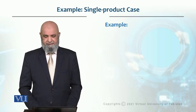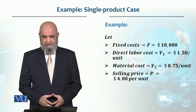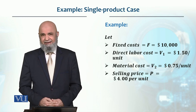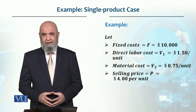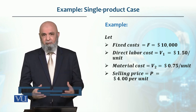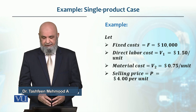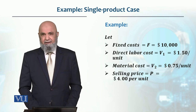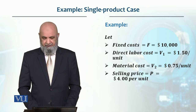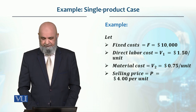Let's look at an example of a single product case — how we determine the break-even point. Let the fixed cost F = $10,000. Direct labor is V1 and material cost is V2, meaning there are two portions of variable cost. V1 (direct labor) is $1.50 per unit, and V2 (material cost) is $0.75 per unit.